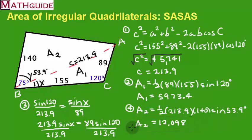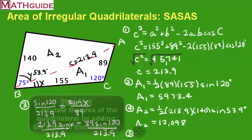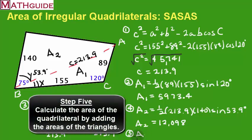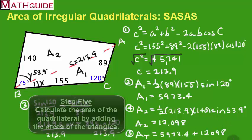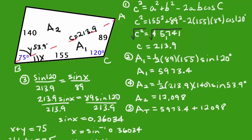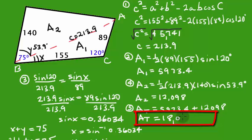Of course, that is not the final answer. Our last step is to calculate the total area. The total area, which I'll call A_T, is nothing more than adding the two areas together. So you take Area 1, which is 5,973.4, and add it to Area 2, which is 12,098. Adding those together I get 18,071.4, and of course this would be in square units — whatever the units are, we've got square units.